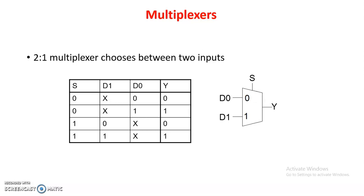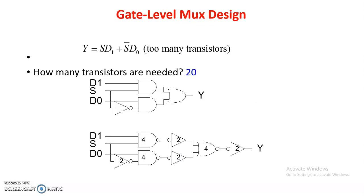So if the select line is 0, D0 signal comes to the output. If select line S is 1, then D1 signal comes to the output. That is the 2-to-1 multiplexer. The logical function of this 2-to-1 multiplexer is: Y = S·D1 + S̄·D0, derived from the truth table.